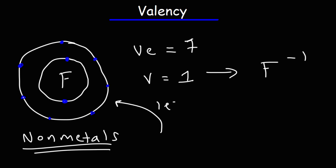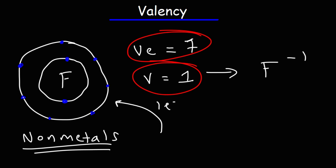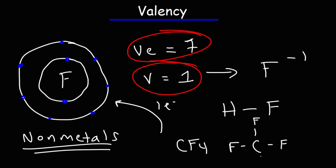So in the case of non-metals, the number of valence electrons and its valency will be different. The valency tells you the number of bonds that an element likes to form. Fluorine, because it only wants to acquire one electron, typically forms one bond. A good example is hydrofluoric acid, or carbon tetrafluoride CF4. In each of these molecules, each fluorine atom contains only one bond.